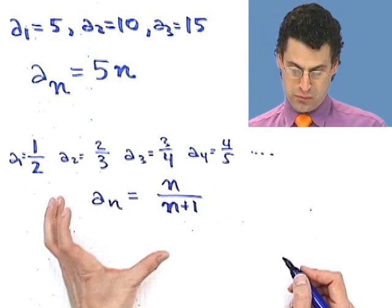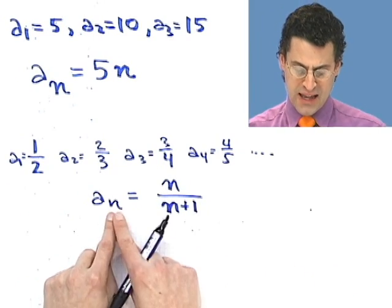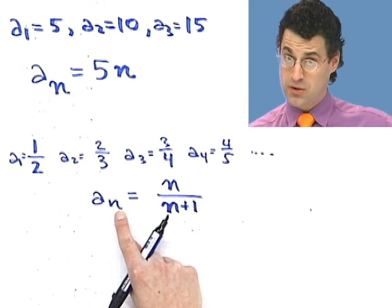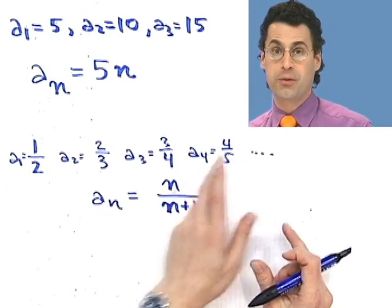And that's how I'd write this, what really is a function, but I'm now thinking about it as a sequence. So I'm only going to let n be 1, 2, 3, 4, and so on, all the way down the line. So now we see a general formulation for the beginning part of the sequence.